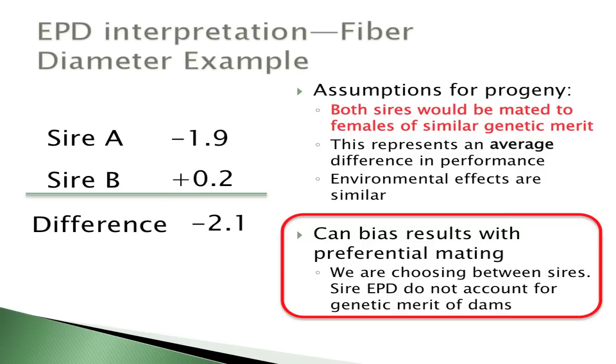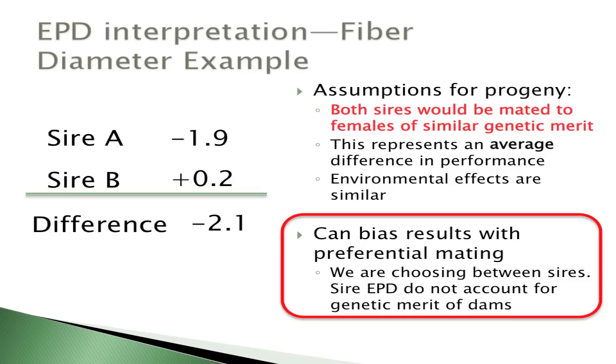We're assuming sires are mated to females of similar genetic merit — you give them a fair shake, fair competition. One Sire A doesn't just get mated to the best females and B to the worst. With preferential mating, this may not hold, because we're not accounting for differences in genetics from the female. We can account for the female, but we need to know her EPD as well.